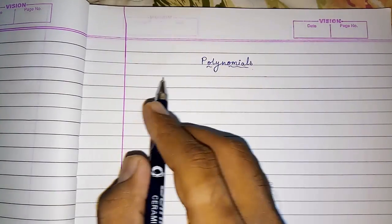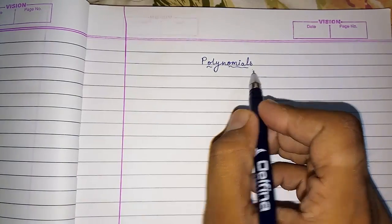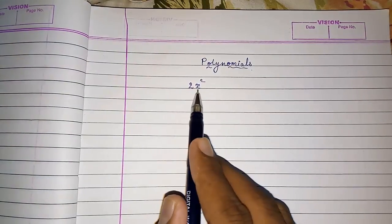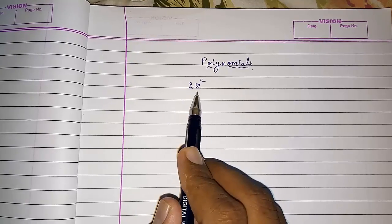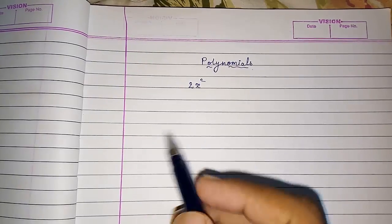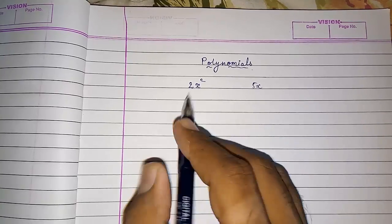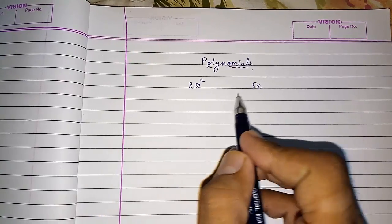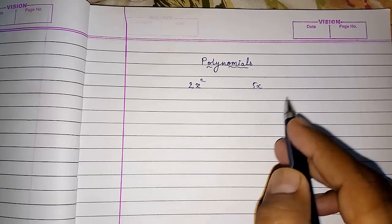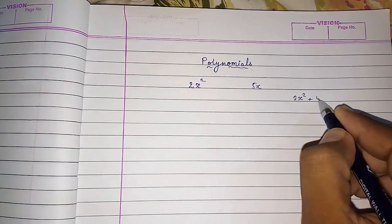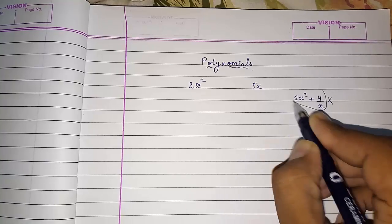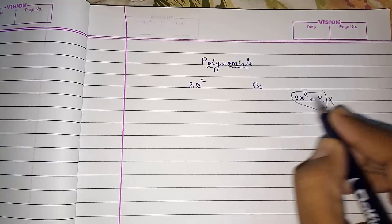What is a polynomial? If I write 2x squared — a number carrying a variable and a constant — then it is called a polynomial. For example, 5x, 7y squared, 8xyz — these all are polynomials. However, if the variable is in the denominator, like 2x squared plus 4 divided by x, then this is NOT a polynomial.